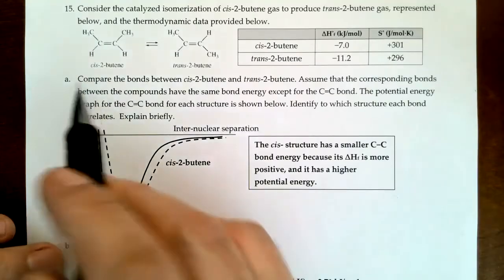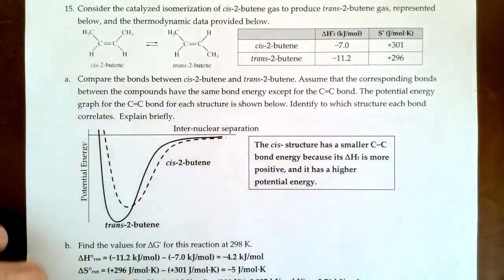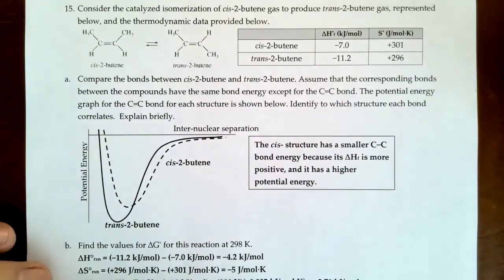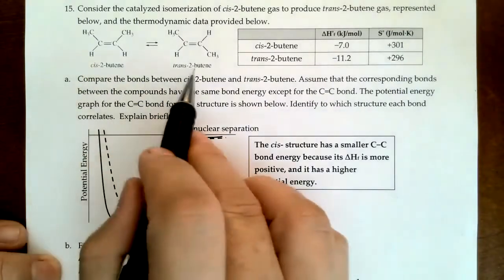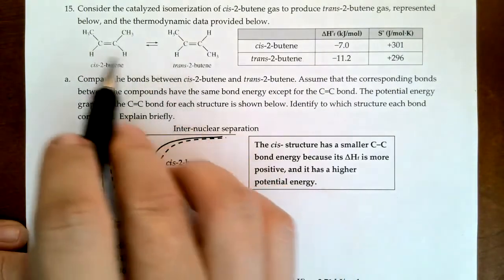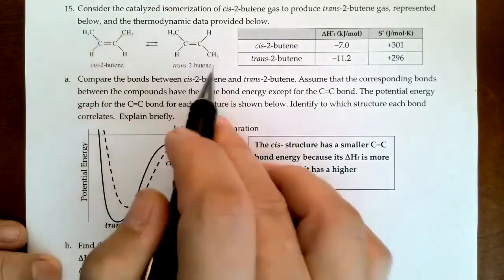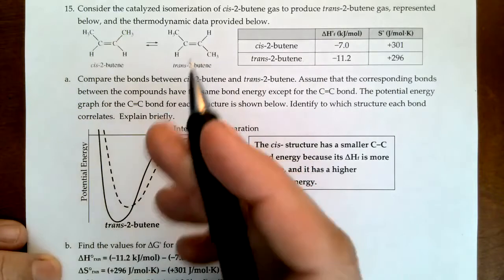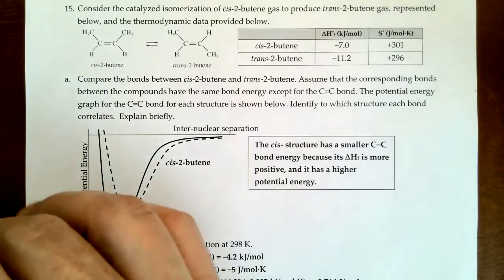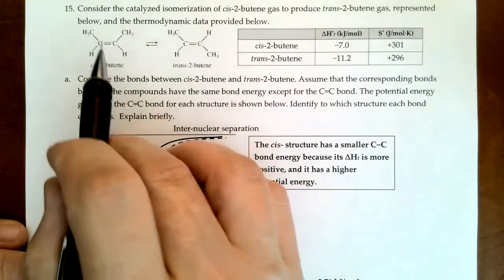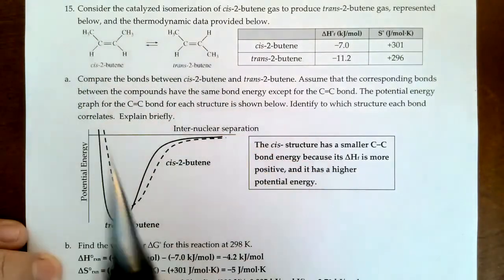For 15, first off — just a college class note — cis and trans just come from Latin roots meaning this side and other side. In case you thought I meant something else, actually all those other uses got borrowed from that root meaning, and then probably from chemistry itself.